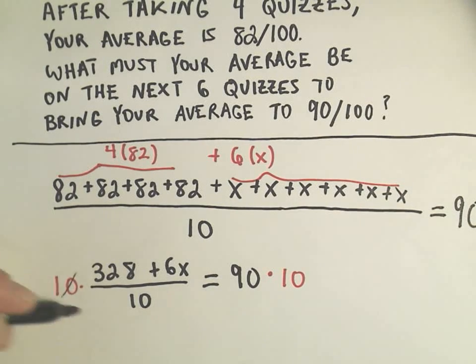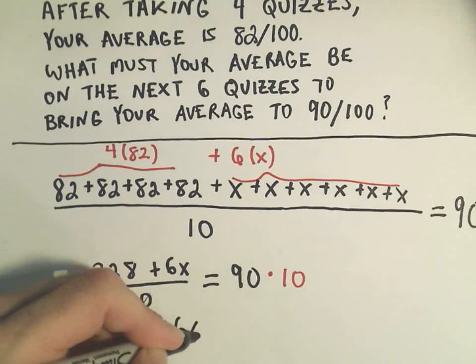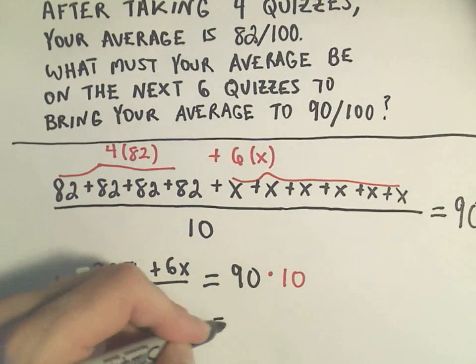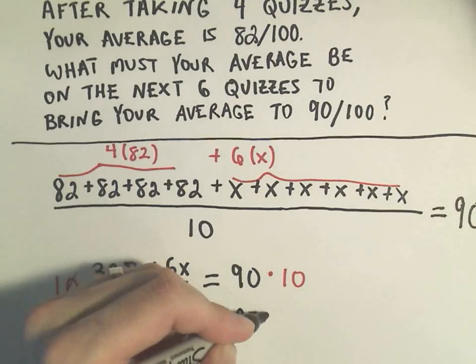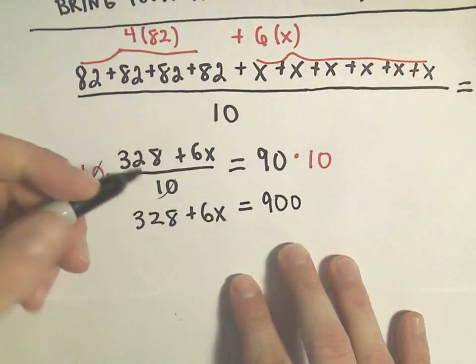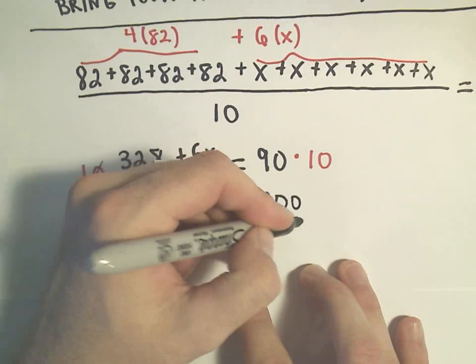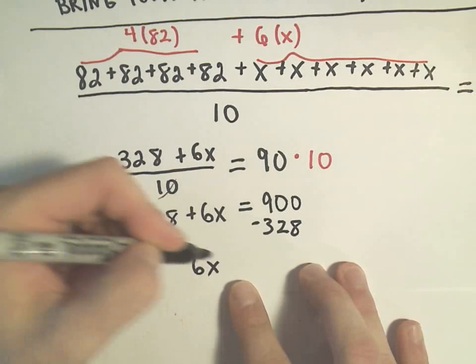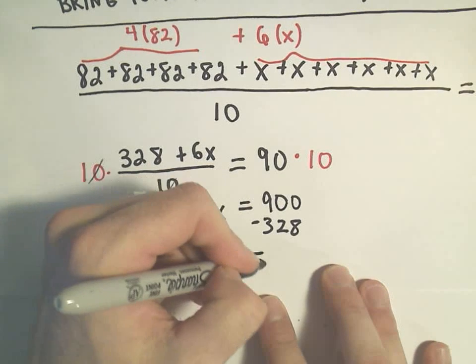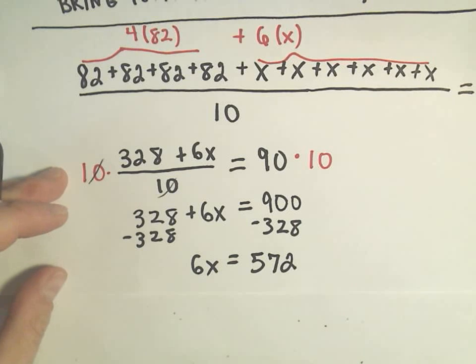So on the left side, that would simply cancel it out, and we've got 328 plus 6x. So 90 times 10 would be 900. So the next thing I would do is subtract the 328 from both sides. So minus 328 minus 328. So we have 6x, I believe this would be 572. Okay.